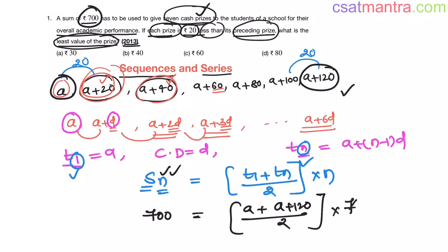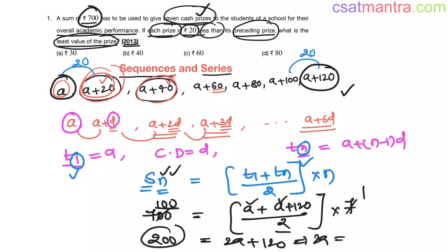Working through the equation: 700 equals 7 into (2A plus 120) divided by 2, which gives 100 equals 2A plus 120. Wait — simplifying: 200 equals 2A plus 120, so 2A equals 200 minus 120, which is 80. Therefore A equals 40. The least value of the prize is 40 rupees. So our answer is option B.